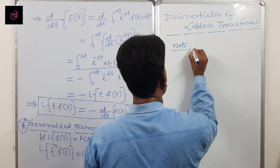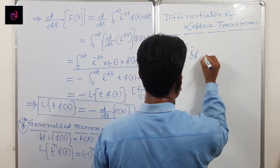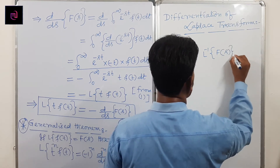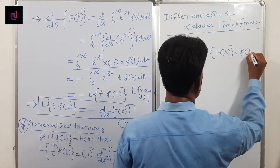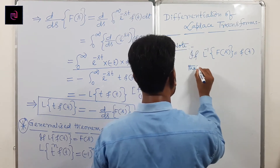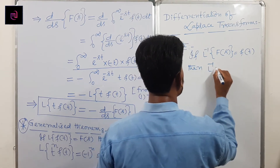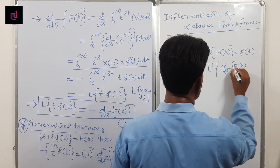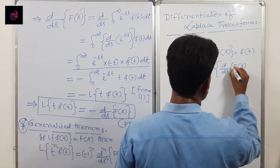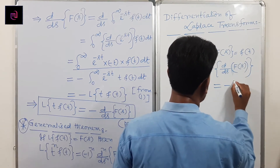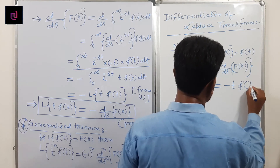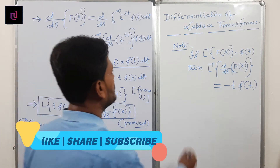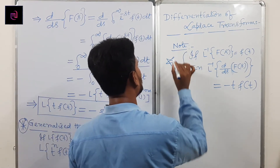If Laplace inverse of F(s) equals f(t), then we can also write the inverse form: Laplace inverse of d/ds of F(s) equals minus t·f(t). Using this formula we can also solve problems involving inverse Laplace transform.